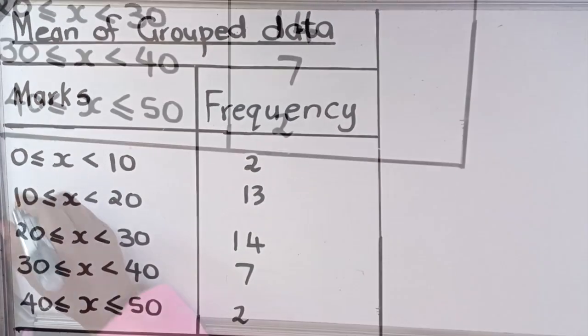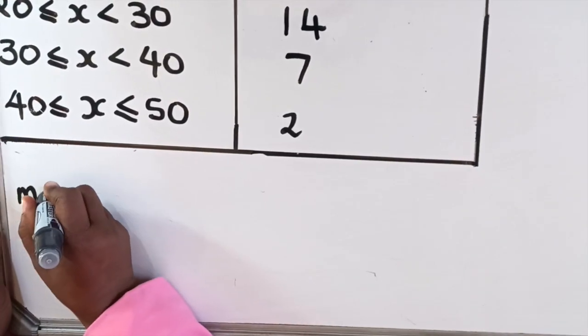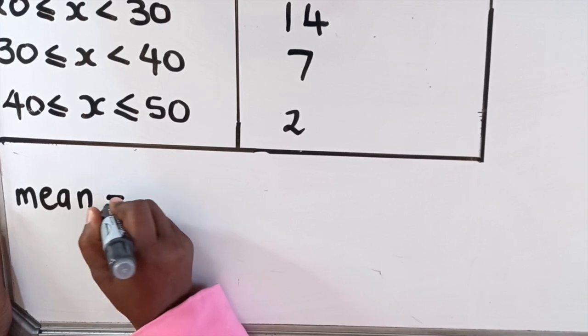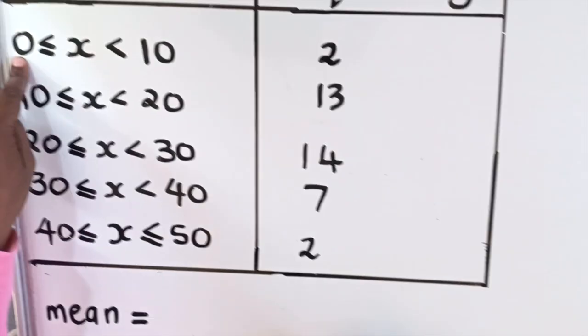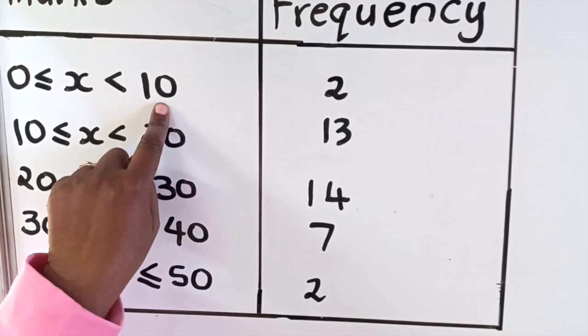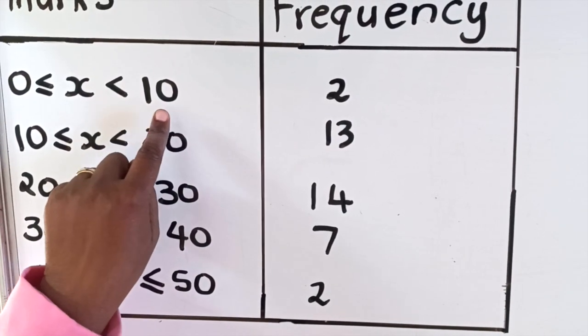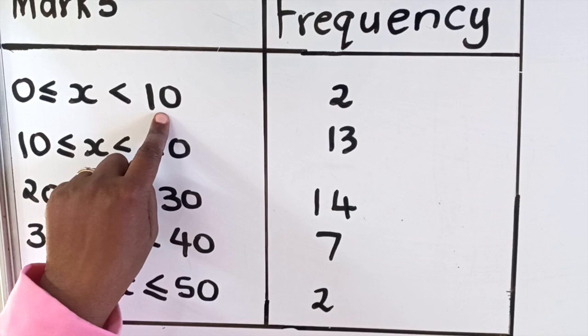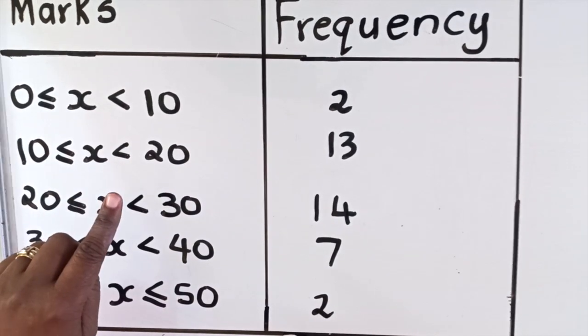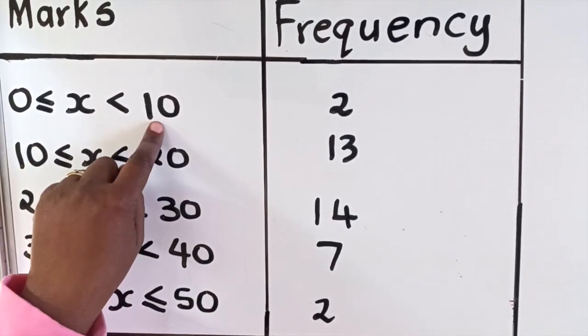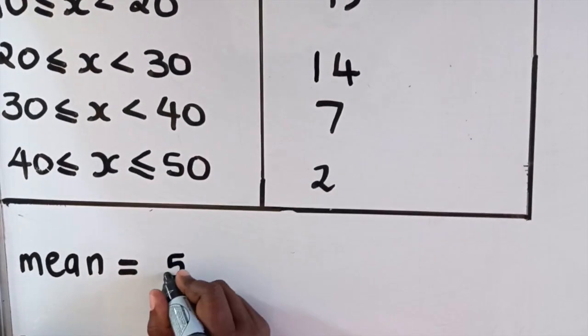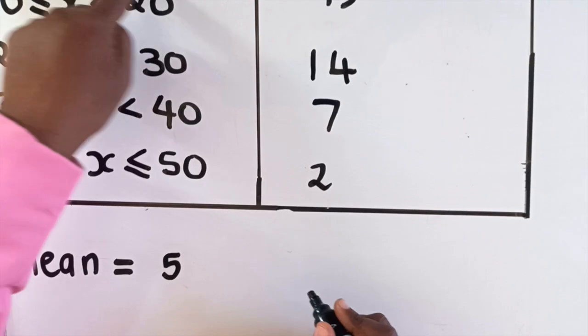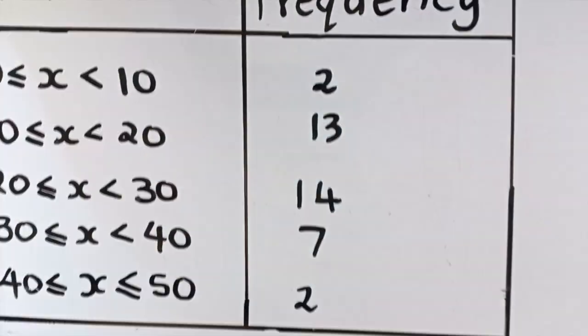When you calculate the mean of grouped data, you take the interval and add the two values. So you say 0 plus 10 which is 10, then divide it by 2. We call that the midpoint. So you add this and divide by 2: 10 divided by 2 is 5. That 5 you multiply with the frequency of that interval.